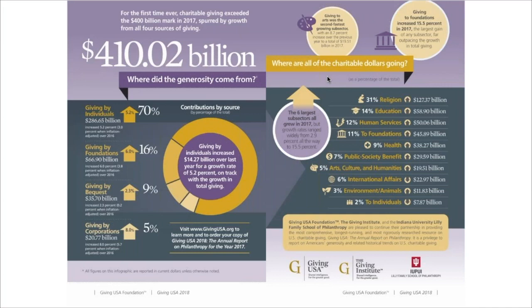Before we do that, let me share a favorite slide of mine about the philanthropic culture. Where does money come from? Every year GivingUSA produces an amazing report. In 2017, over 400 billion dollars — billion with a B — was given to philanthropic causes throughout the United States, broken down across nonprofits, churches, schools, human interests, arts, culture, international causes, and more.